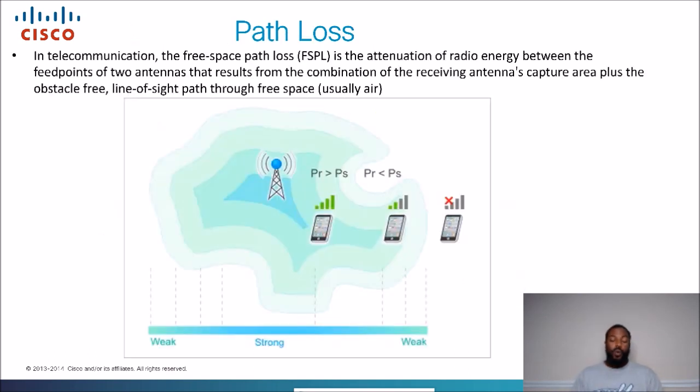So what happens to these radio frequencies as it travels through free space? There's several things that can happen. There's obstacles. One of the things that can happen is what's called path loss. That's defined as in telecommunication, the free space path loss or FSPL is the attenuation. It's also called attenuation. The further it goes, the weaker it is basically.